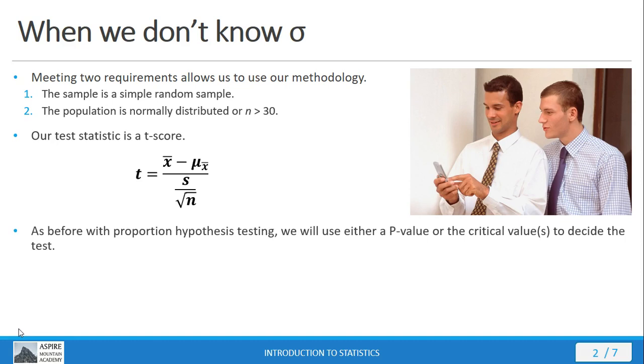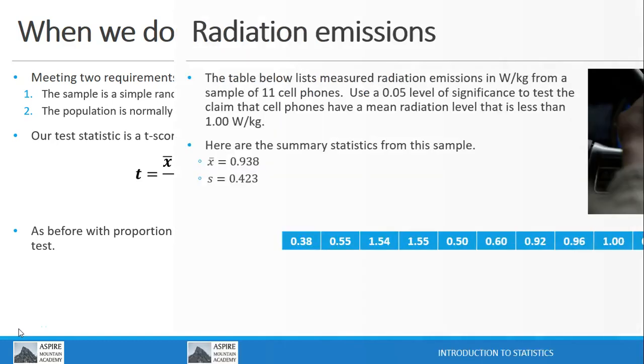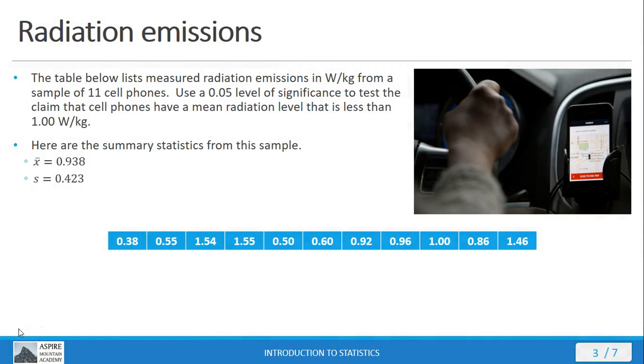As before with proportion hypothesis testing, we're going to use p-values or critical values with the test statistic to decide the test. Let's look at an example to illustrate this.